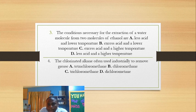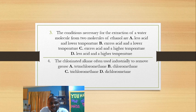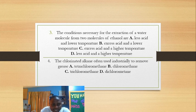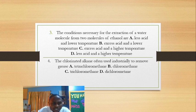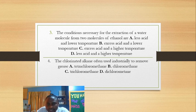Question four: a chlorinated alkane often used industrially to remove grease. The answer is tetrachloromethane, CCl4. Note: trichloromethane (CHCl3) is not correct here — that was a mistake. Tetrachloromethane is used as an organic solvent to remove grease. Another organic solvent is DMSO, dimethyl sulfoxide.